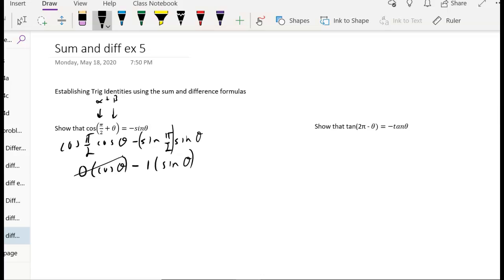Well, we have 0 of these minus 1 of these. That's just the same thing as negative sine of theta. So the identity is correct. Let's look at another one.